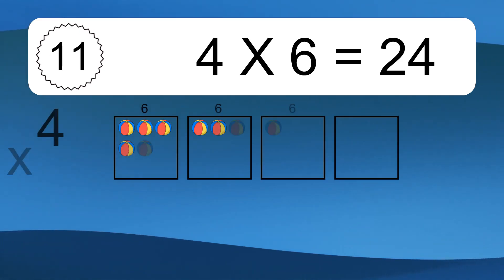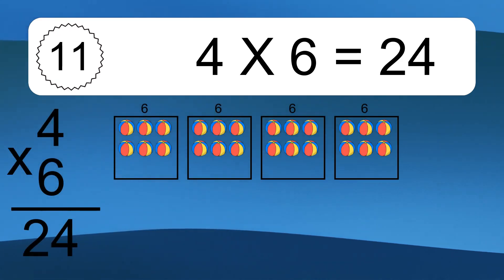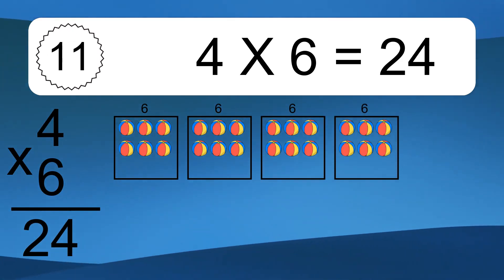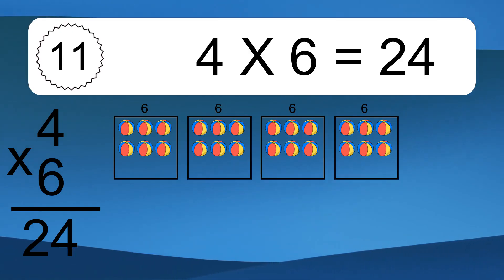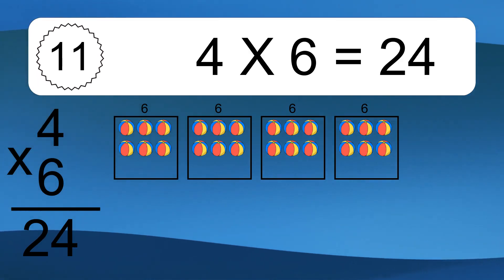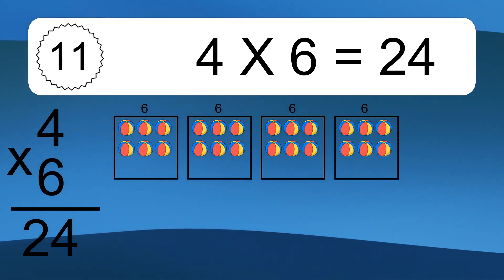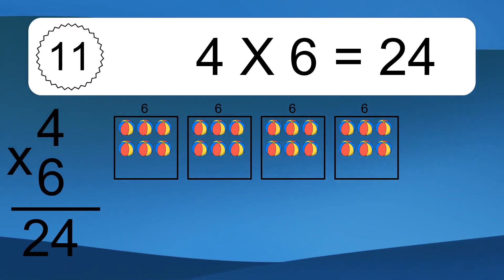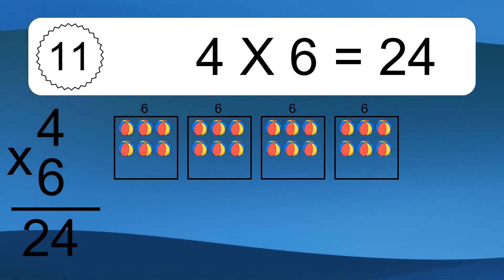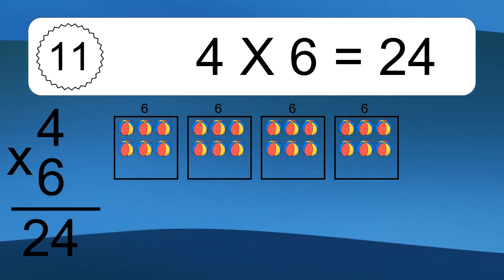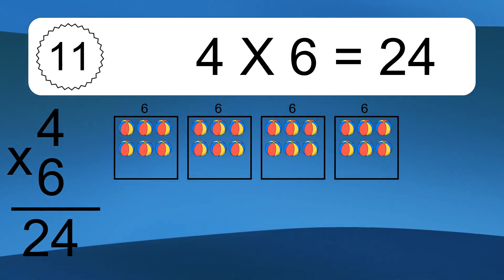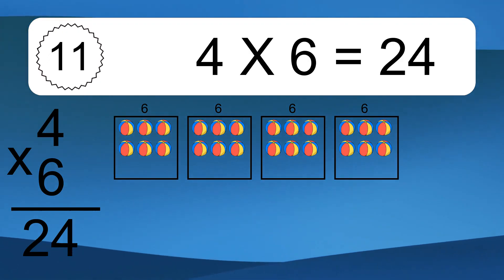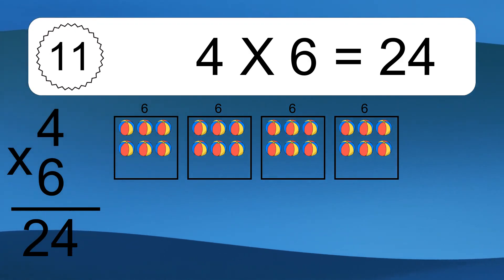4 times 6 equals what? 4 times 6 equals 24. We have 4 boxes, and each box has 6 colorful balls inside. If you count all the balls in all the boxes together, you will have 4 times 6 balls.